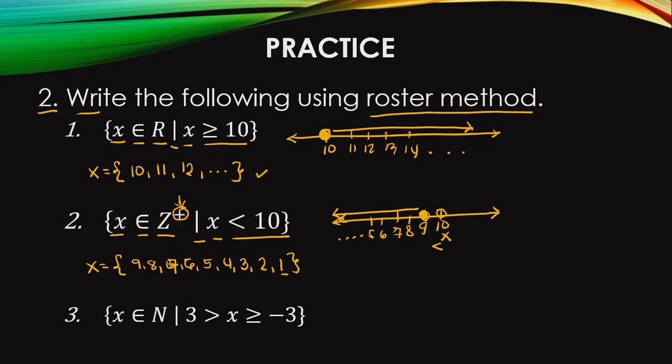Is 0 included? I think not — because 0 is not a positive or a negative number. So it is neutral. Therefore we stop at 1 as the last element. No ellipsis needed — because of the condition: positive integers only.